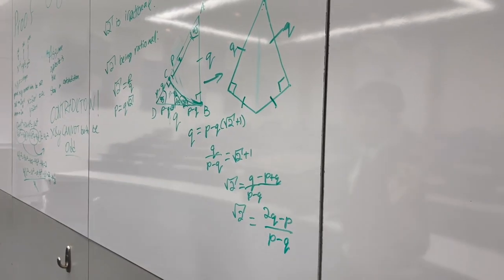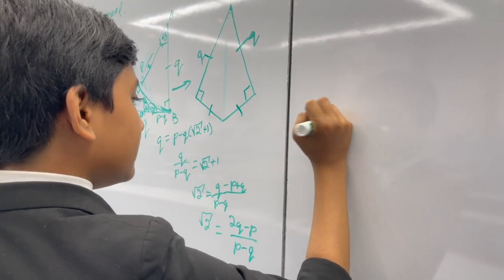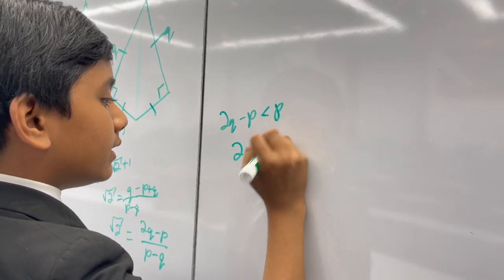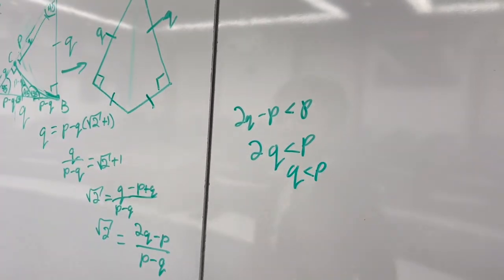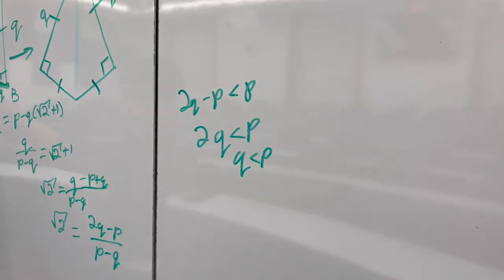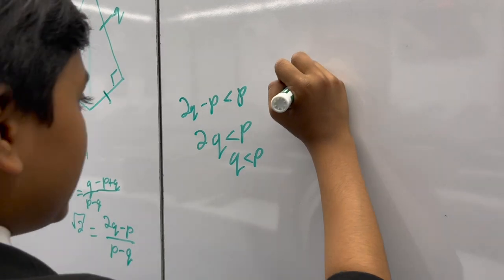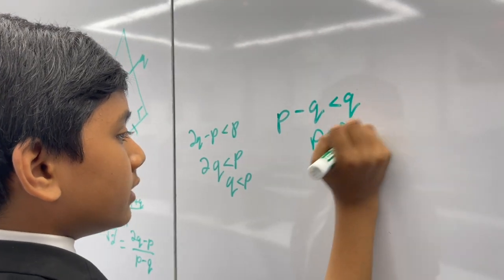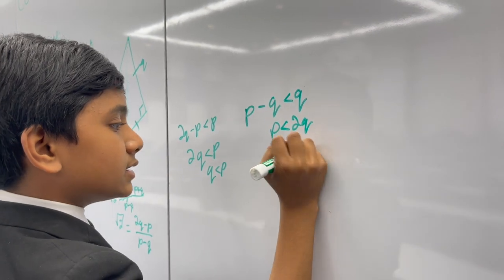And here's the thing now. 2q minus p is less than p, because we've defined that q is less than p by definition, because p is q root 2. And p minus q, obviously, has to be less than q, because p is less than 2q, because root 2 is less than 2.